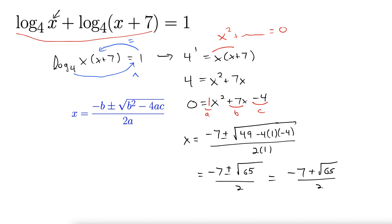And just to make sure that that gives us a positive number, we can compute the square root of 65. That comes out to about 8.06. So negative 7 plus 8.06 is going to give us a positive number, so we're in the clear with that solution. So there we have it.